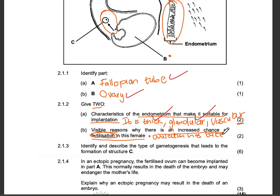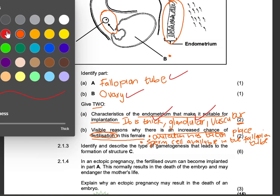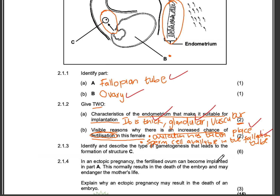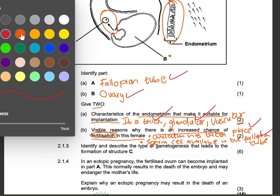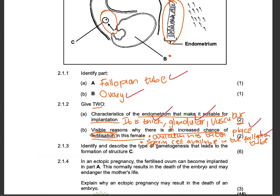The first answer: ovulation has taken place. The second answer: sperm cells are available in the fallopian tube. If you don't want to say ovulation has occurred, you can say the ovum has been released from the ovary — you will also get a mark for that.